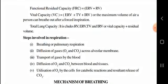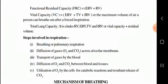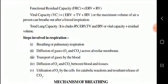Vital capacity = expiratory reserve volume (1100–1200 ml) + tidal volume (500 ml) + inspiratory reserve volume. Total lung capacity = all volumes added together, because total means all the air that goes inside our lungs.